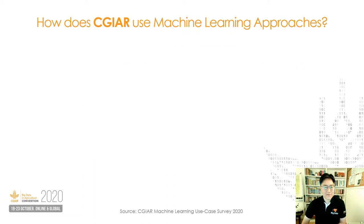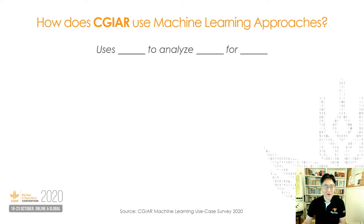How does CGR use these machine learning approaches? We recently ran an online survey to collect CGR's machine learning use cases, where we asked to complete this sentence: what kinds of analytical methods they use, to analyze what kinds of data, for what purposes.